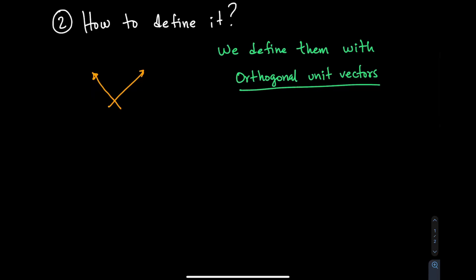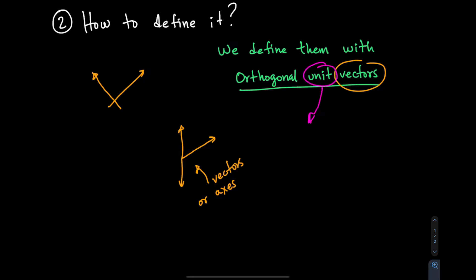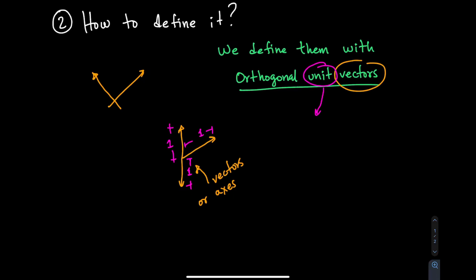Starting with vectors — we just mean the directions we're working with. For three-dimensional space, we use three vectors or axes. The word 'unit' means we use vectors that have a length equal to one. There is no strict restriction on using other lengths, but it is very convenient to use unit vectors, and in general you will define unit vectors.